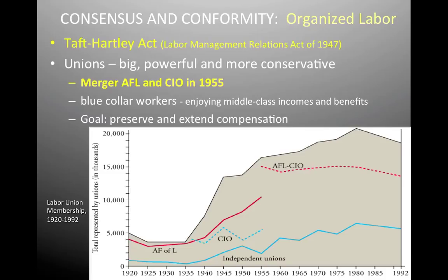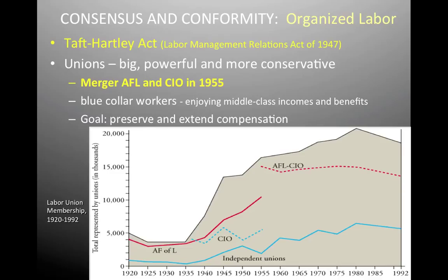It basically leads to a merger of the two biggest unions. The AFL — American Federation of Labor, remember Samuel Gompers — and the CIO were doing really, really well. In 1955, they are going to merge, and now, even to this day, it's known as the AFL-CIO. Blue-collar workers who had been enjoying middle-class incomes were starting to strike. The Taft-Hartley Act basically limits labor unions' ability to strike, which labor is not going to like, but management is going to love.